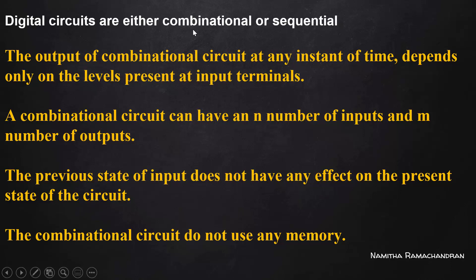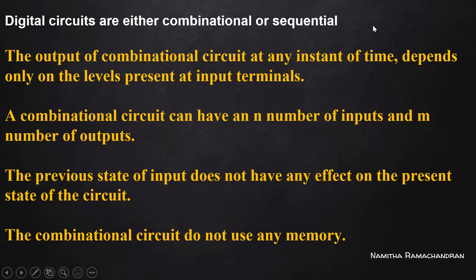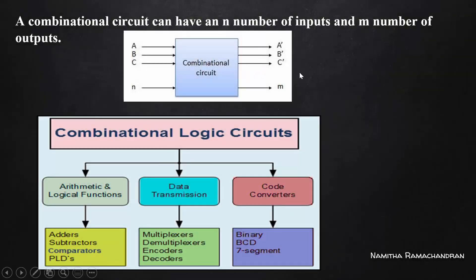The previous state of the system does not affect the present output of the circuit. Combinational circuits do not use any memory, because generating a new output does not depend on the previous state — we do not need to remember anything. In contrast, a sequential circuit's current state depends on current input as well as the previous state, so it needs memory to remember the status of the previous state. A combinational circuit depends only on the present input.